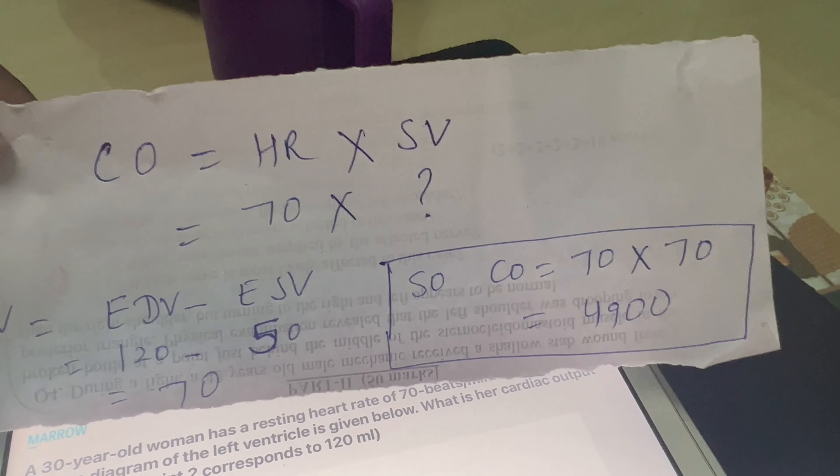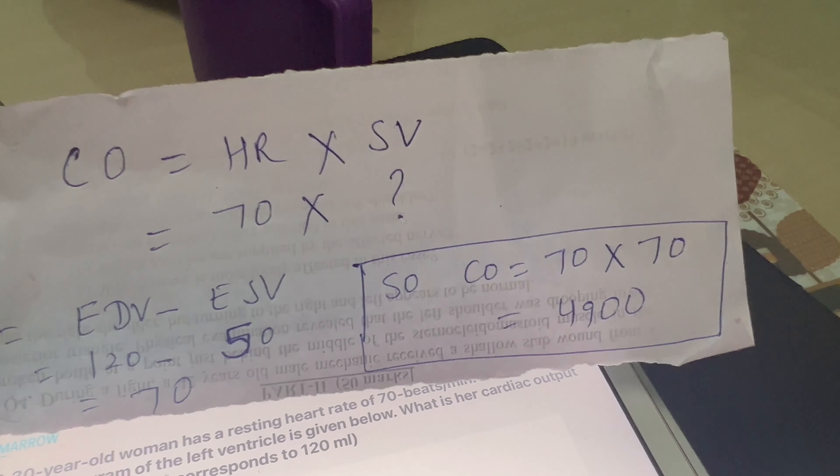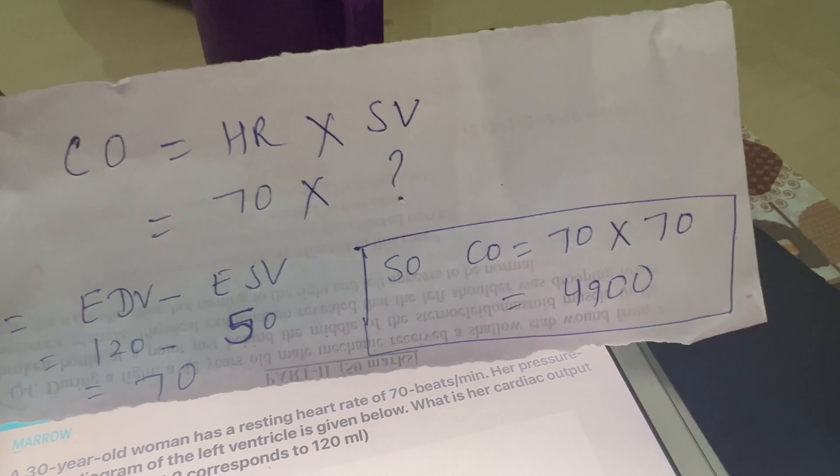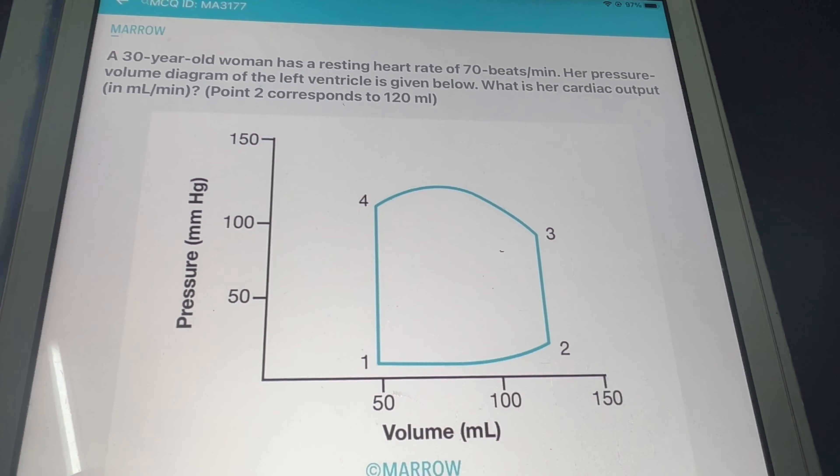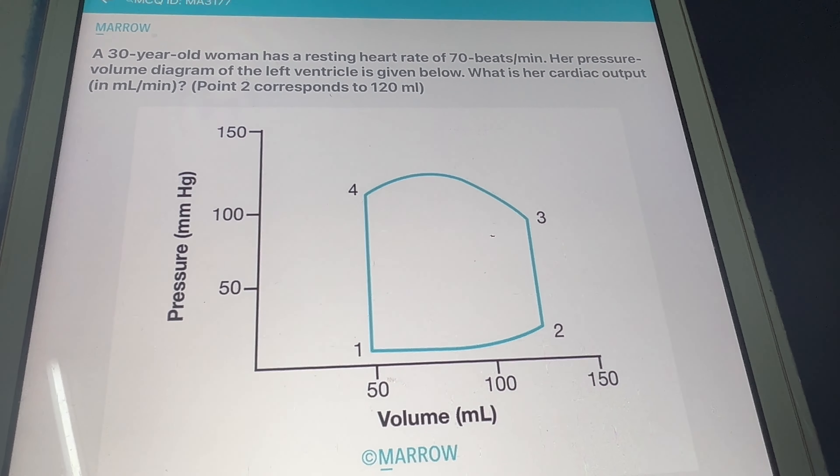So what we have to do: first we will calculate the stroke volume, and then we will calculate the cardiac output. For that, I am showing you the calculation. This is the calculation.